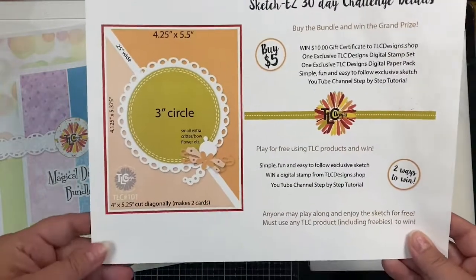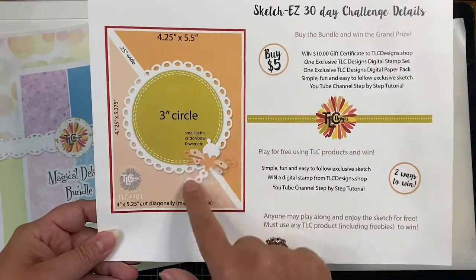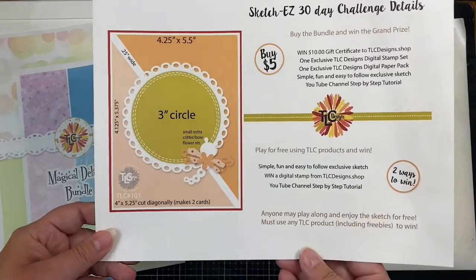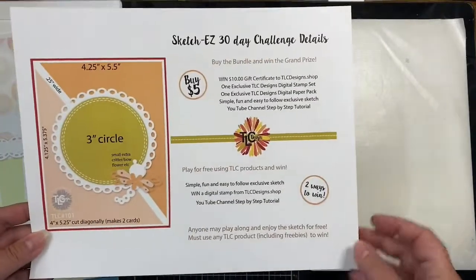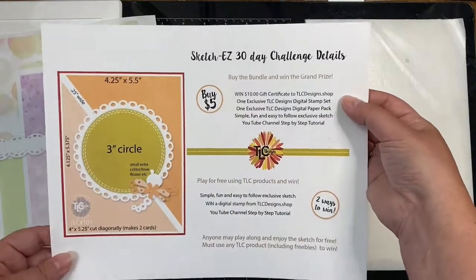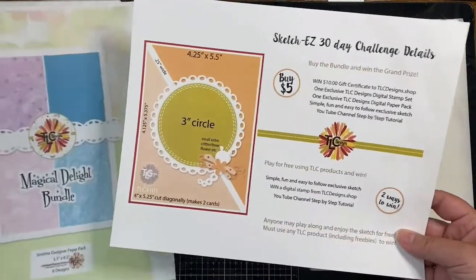This sketch easy bundle is a great value because not only do you get a digital stamp set with images that come in both JPEG and PNG file formats, you also get a set of digital papers. A link to the bundle will be in the description box below.